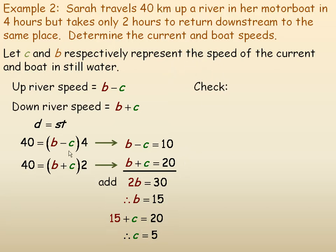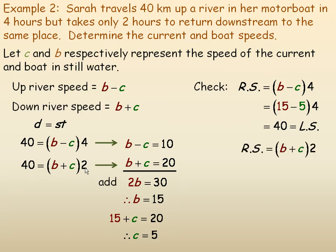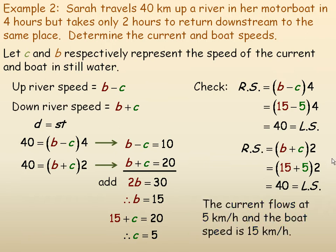You should always check in your original equations, not the simplified versions — if you made an error simplifying, checking the simplified form wouldn't catch it. Back to the originals: (15 minus 5) times 4 equals 10 times 4 equals 40. And (15 plus 5) times 2 equals 20 times 2 equals 40. It checks in both equations. Concluding statement: the current flows at 5 kilometers per hour, and the boat speed in still water is 15 kilometers per hour.